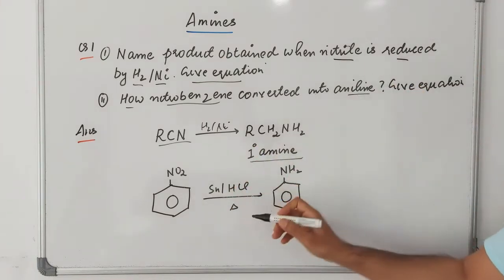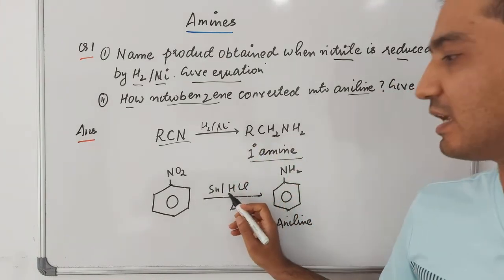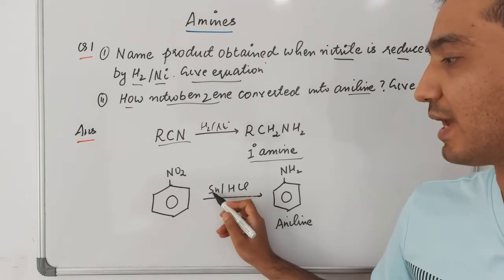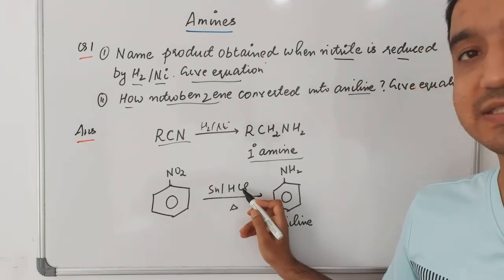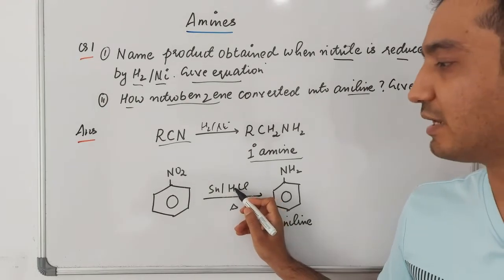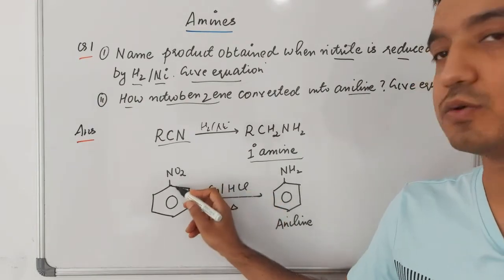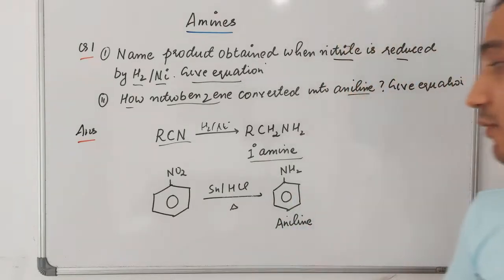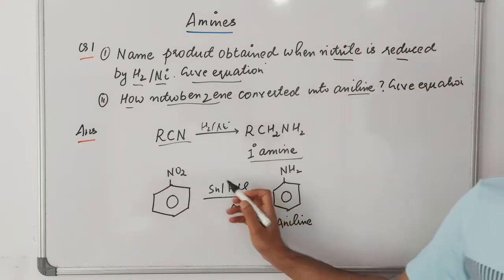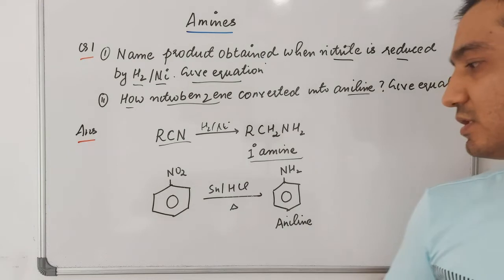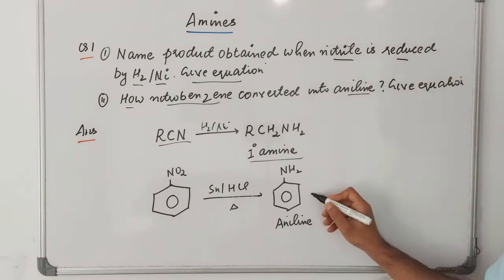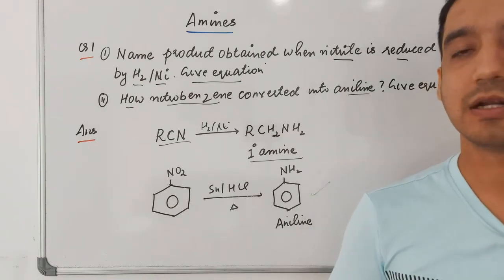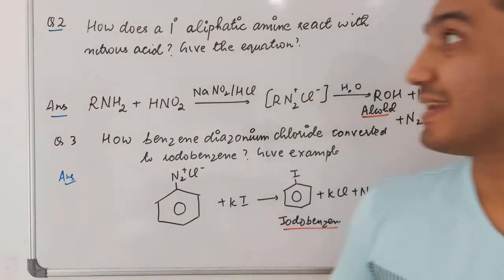For converting nitrobenzene to aniline, you can use Sn in the presence of HCl and heat. Sn reacts with HCl, releasing hydrogen. This is a reduction reaction where hydrogen gets attached to the nitrogen, resulting in the formation of aniline. These are the two reactions for question one.